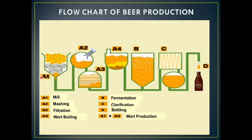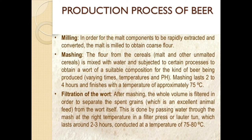Here is the flowchart: A1 is mill, A2 is mashing, A3 is filtration, A4 is boiling. Further, B is fermentation, C is clarification, D is bottling, and A1 to A4 is wort production. We are going to discuss these steps in detail in the upcoming slides.